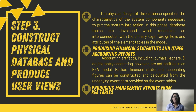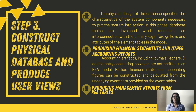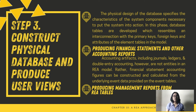This is Ms. Zapata, and I will be discussing the last part of the topic. The third and final step of view integration is to construct the physical database and produce user views. This sets up the design system of the modified information system. In this phase, database tables are developed which resemble an interconnection with the primary keys, foreign keys, and attributes of the element tables in the model. The tables are then populated with data values belonging to a specific element — whether a resource, agent, or event. By producing accounting and non-accounting reports, the relational database tables are drawn out to generate information of the utmost importance. Financial statement accounting figures can be constructed from the underlying event data on the event tables, and these can be used to prepare income statements, balance sheets, and journal entries. The database should be a workable source capable of producing multiple reports to cater to the information needs of non-accounting users. The data for a particular report are constructed from the various REA tables.